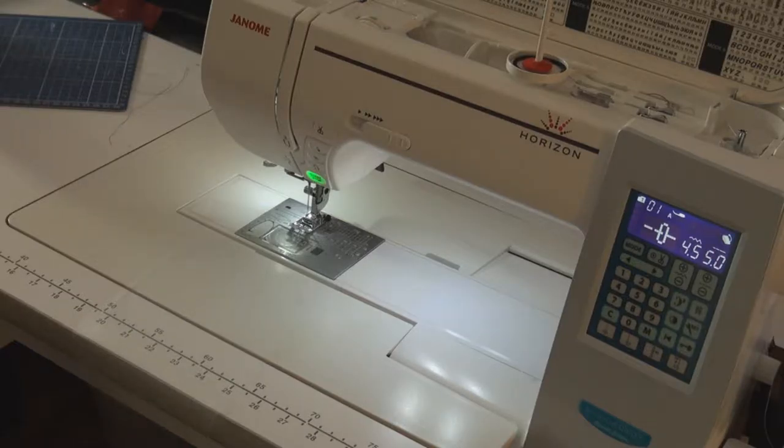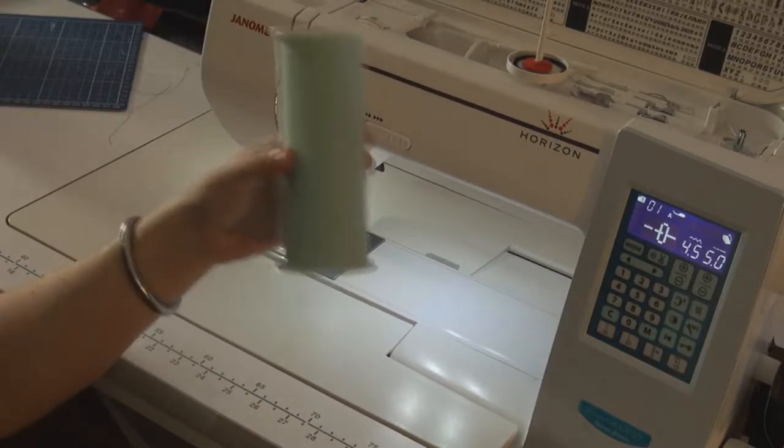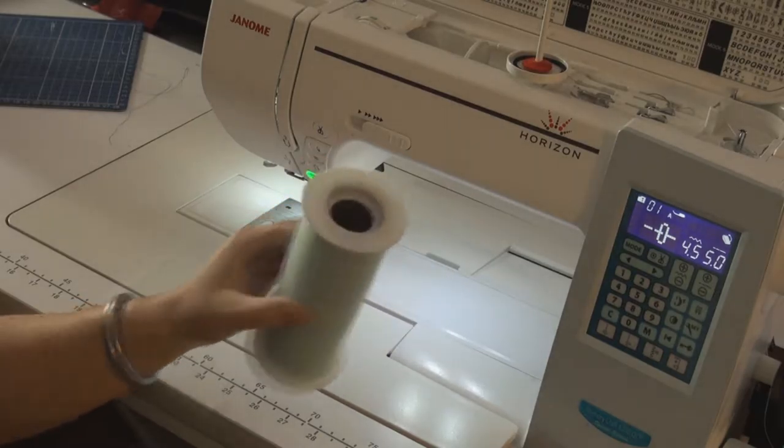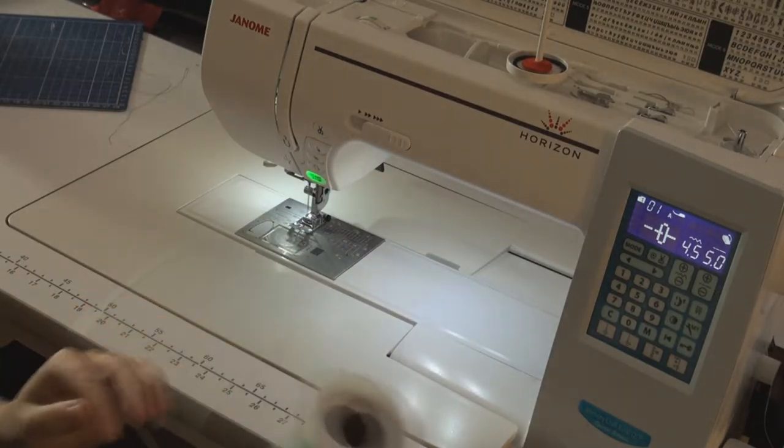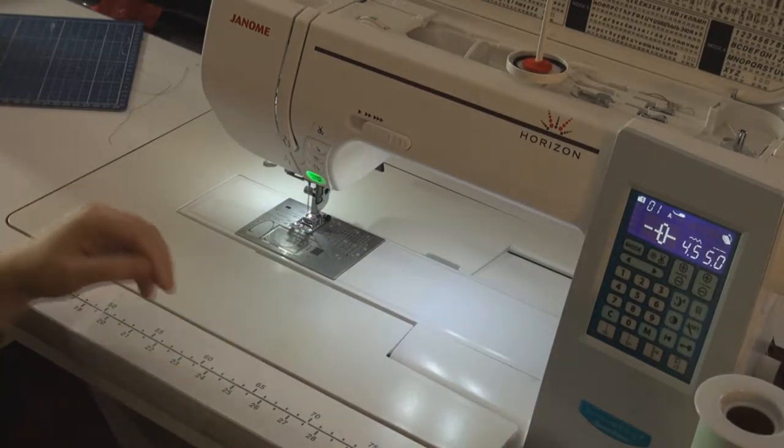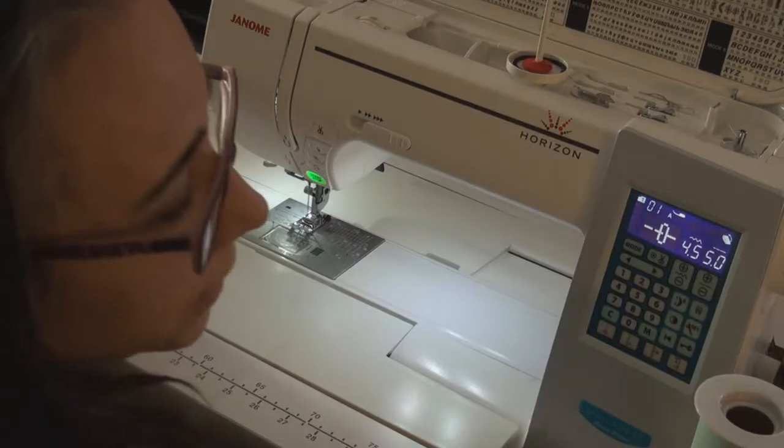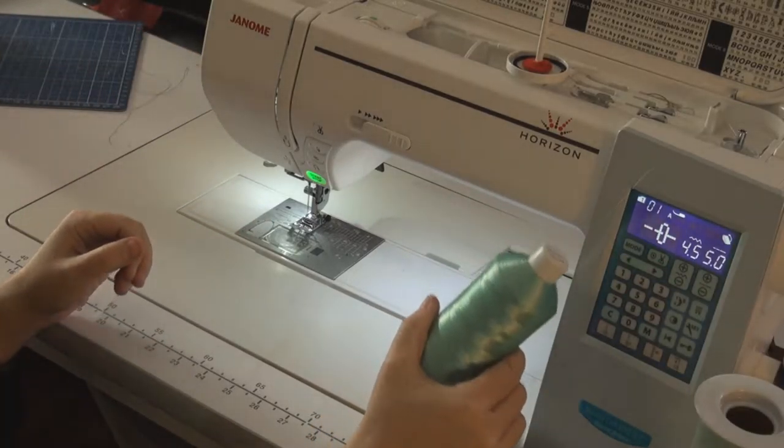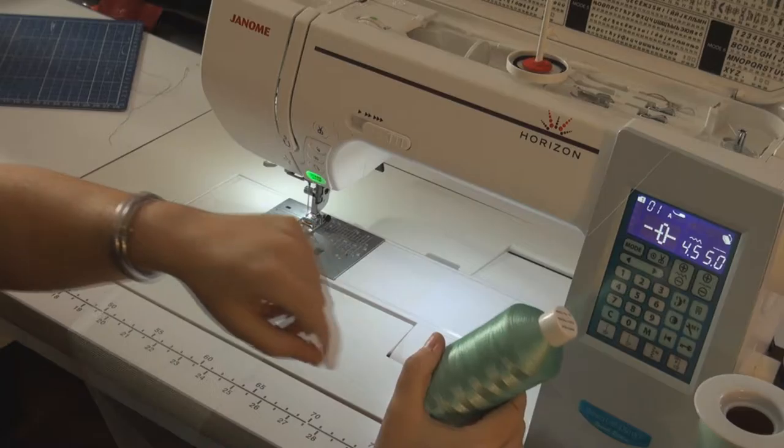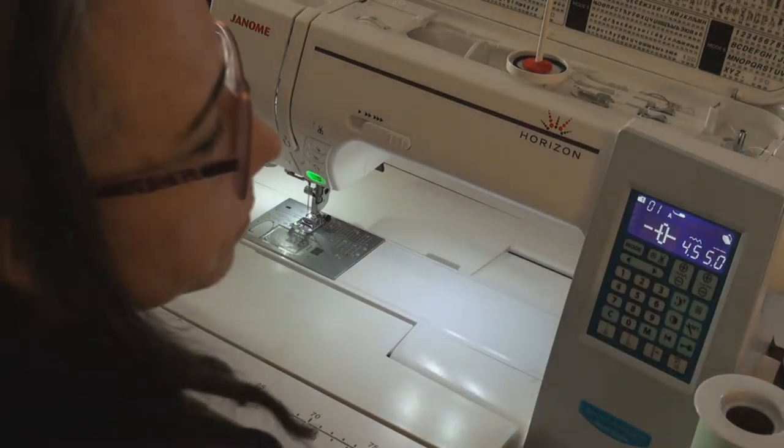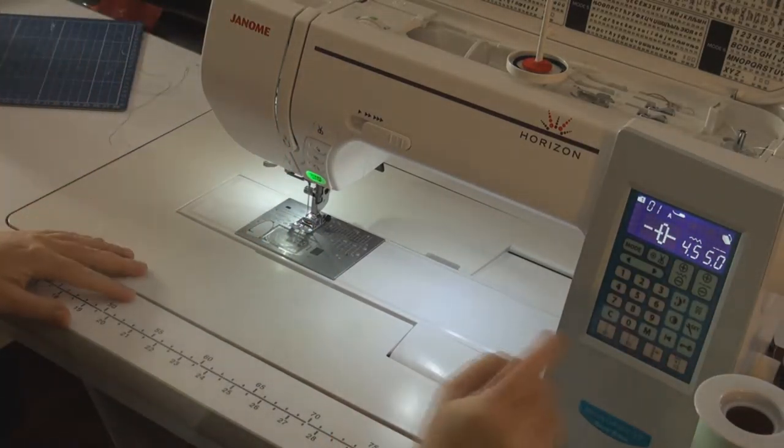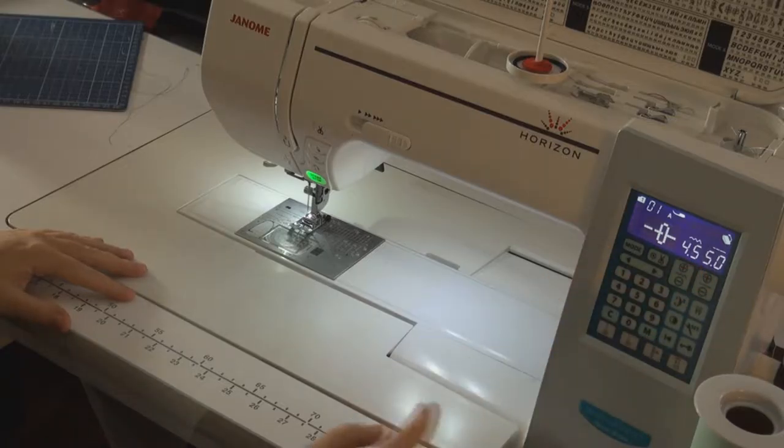For this tutu, I used a 6-inch roll of tulle. I used the same color in the bobbin and on top, and I put my stitch length at 5.